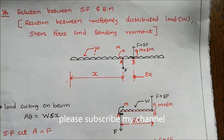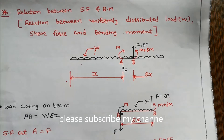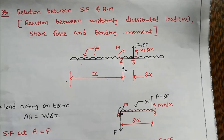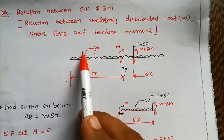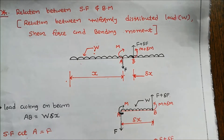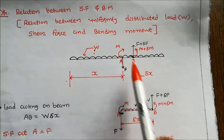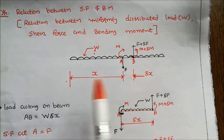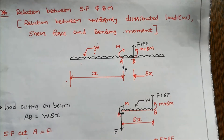Hello friends. Today we discuss how to derive the relation between uniformly distributed load, shear force, and bending moment. Here, we first consider a beam carrying UDL of W per unit length, then consider a small portion AB of length delta x at a distance x from the left side of the beam.